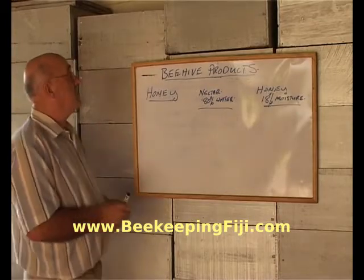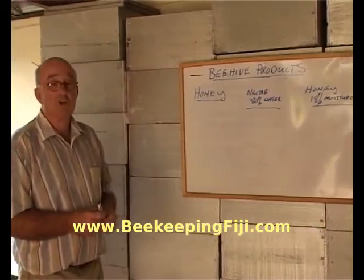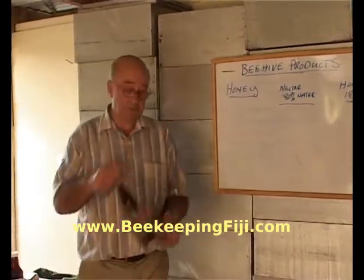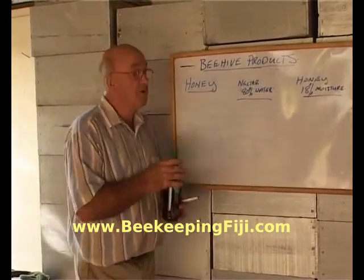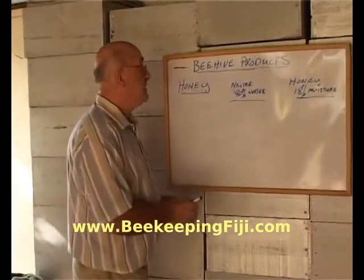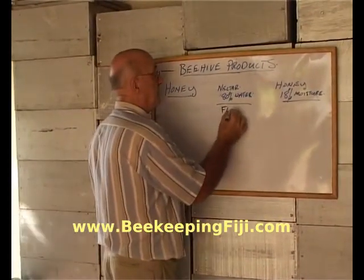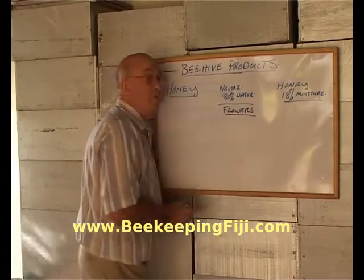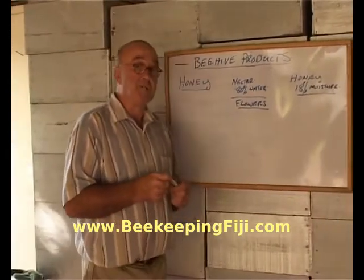This time we want to cover a beehive product. The first one we'll look at is honey, that's the most common product of the beehive. And honey is derived from nectar, which is gathered from the flowers by the bees from nectar-bearing flowers.